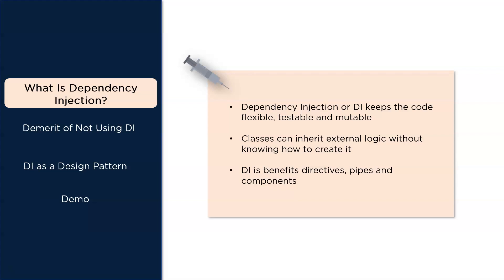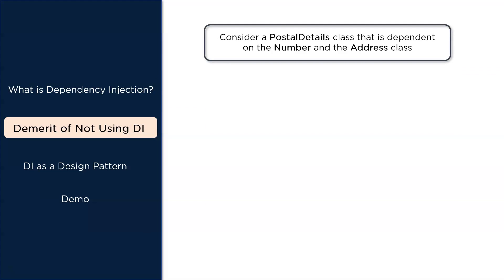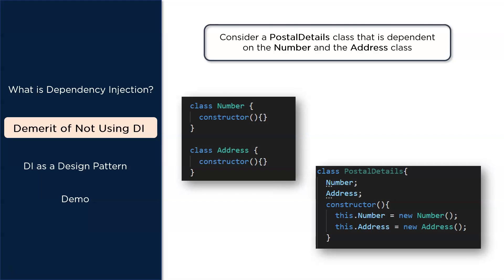DI also benefits directives, pipes, and components. Now let's look at the drawback of not using dependency injection. Consider a class PostalDetails that is dependent on the Number and Address classes. In the PostalDetails class, the constructor creates copies of Number and Address, so when you instantiate a new PostalDetails class, the constructor instantiates a unique Number and Address.